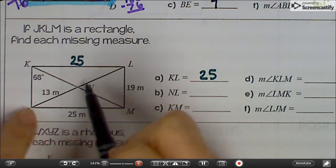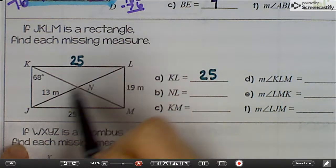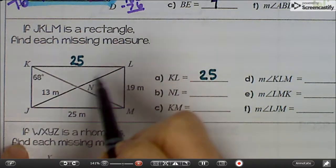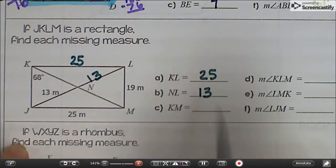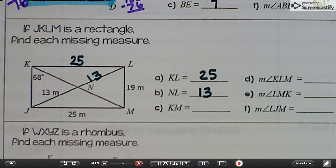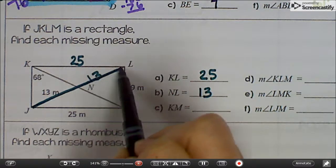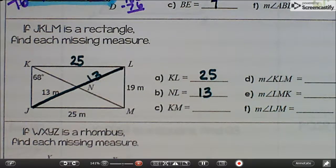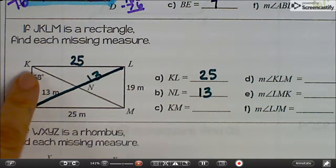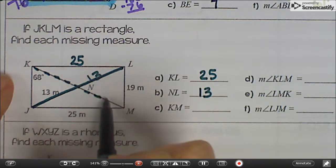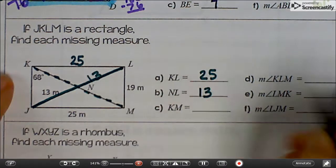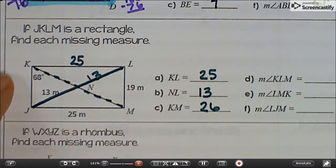And NL, because in a rectangle diagonals bisect each other, that has to be 13 for that piece. This whole diagonal here would be 26. And now it's asking for KM, this whole one. In a rectangle, diagonals are congruent. So that has to be 26 also. All right, I hope you're catching on a little.